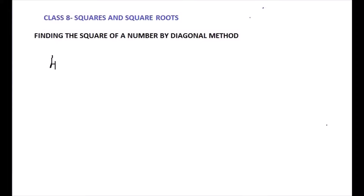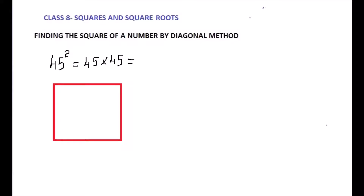Let us consider the number 45. We want to find the square of 45, which is 45×45. To find that, first draw a square and divide it into 4 boxes — both horizontally and vertically. That gives us 4 boxes, because the digits are 4 and 5, which we write both horizontally and vertically. Then divide each box diagonally into two parts.